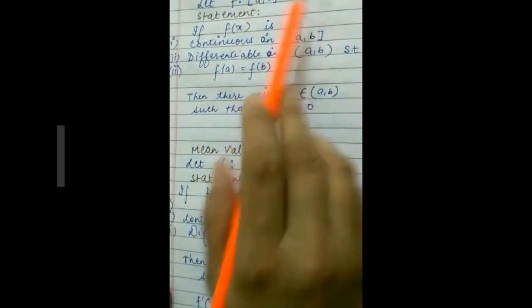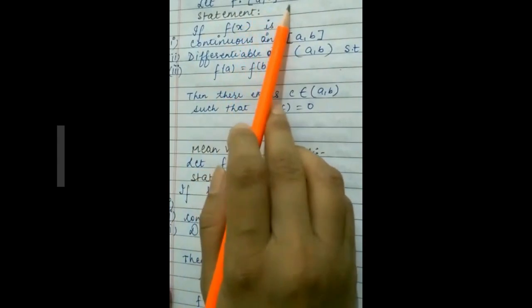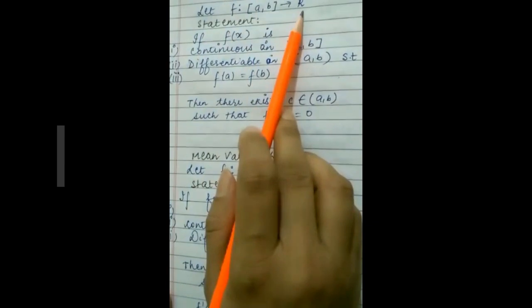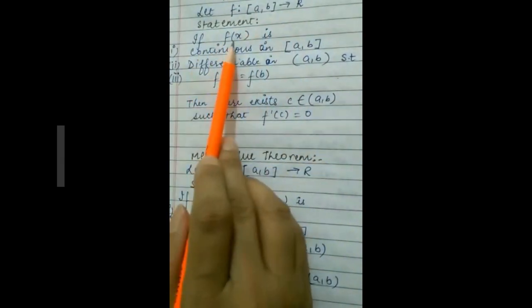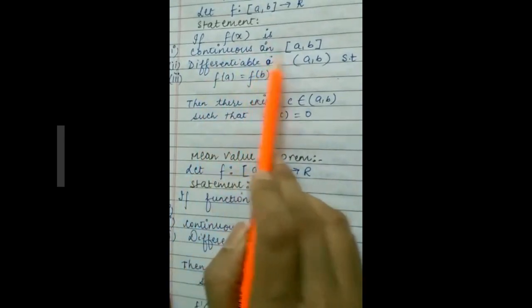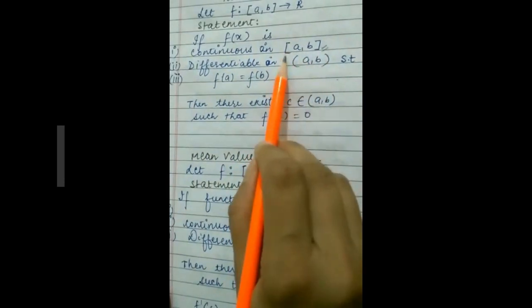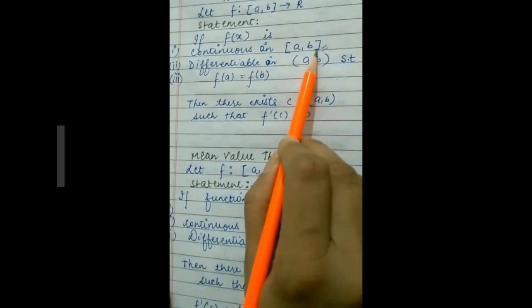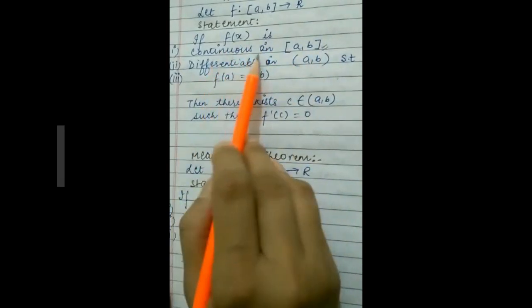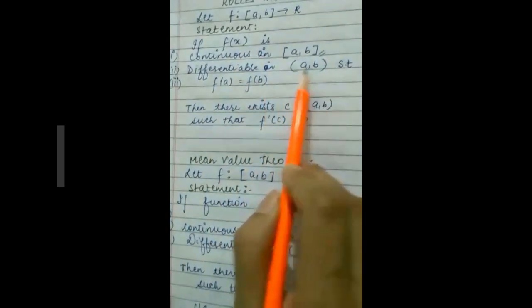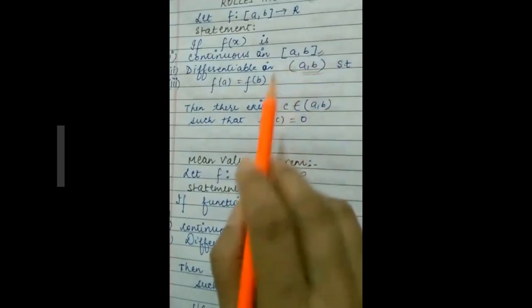Rolle's Theorem says that if f is a function from [a, b] to ℝ — that means the domain of the function is [a, b] and the range is ℝ — then the conditions are: f is continuous on the closed interval [a, b] (a and b are included), and f is differentiable on the open interval (a, b), meaning a and b are not included.